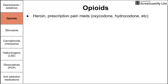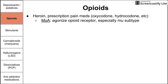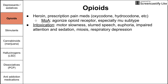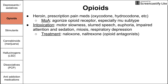Opioids are next. These include heroin and prescription pain medications like hydrocodone and oxycodone. The mechanism is that they antagonize the opioid receptor, especially the mu opioid receptor. Intoxication shows motor slowness, slurred speech, euphoria, impaired attention and sedation, miosis, and respiratory depression. Treatment is naloxone or naltrexone, both opioid antagonists, which would antagonize the receptor that opioids hit and detoxify you from opioid intoxication.